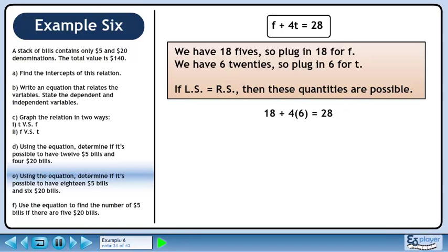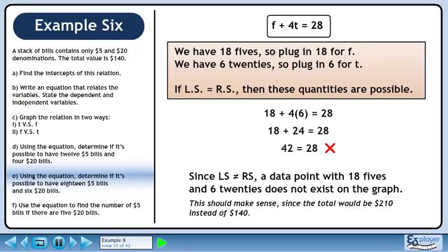Plug in 18 for f and 6 for t. This gives us 18 plus 24 equals 28. This evaluates to 42 equals 28. Since the left side does not equal the right side, a data point with 18 5s and 6 20s does not exist on the graph.